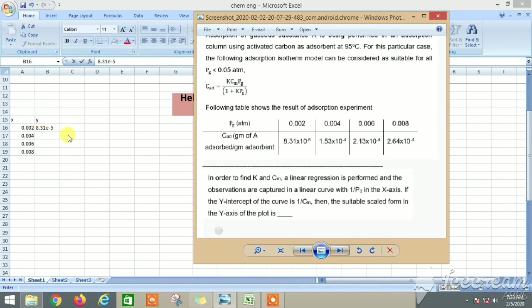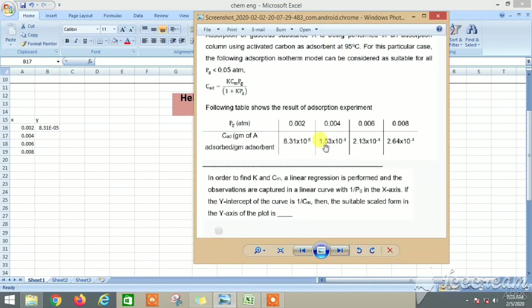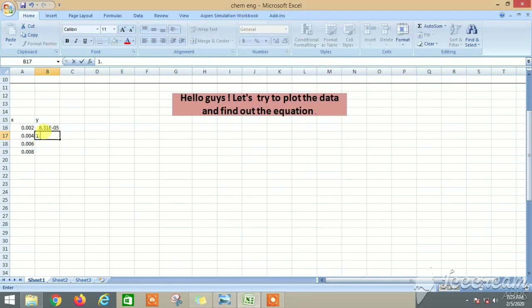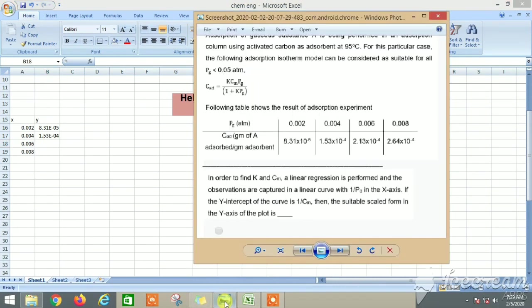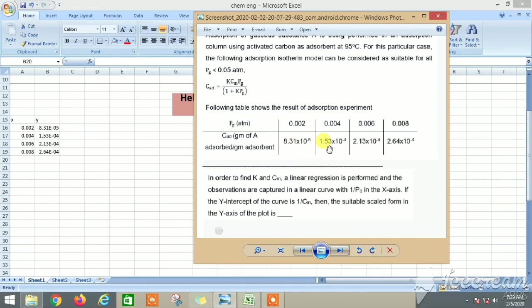If you write in Excel 'e minus 5', some magnitude, this magnitude into 10 to the minus 5. This is 8.31e-5, 1.53e-4, 2.13, 2.64. Let's check out the values: 8.13×10⁻⁵, 1.53, 2.13, 2.64. Yes, correct.